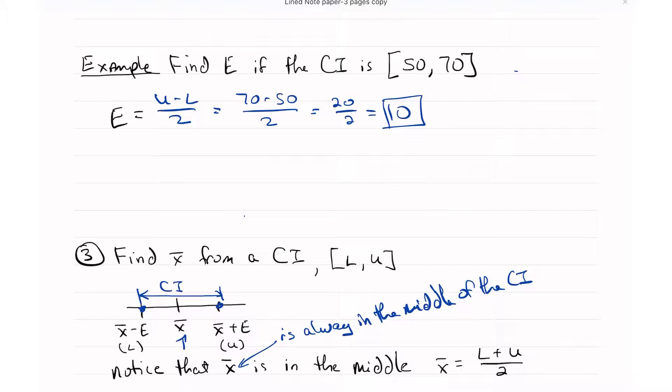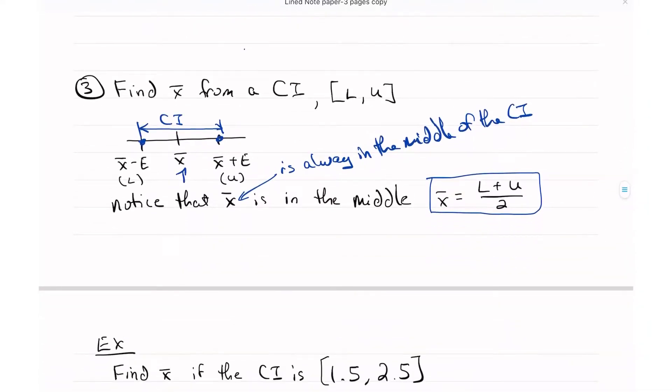So if it's in the middle, we get the middle midpoint by averaging. We're going to average L plus U divided by 2. That's the average of L and U. Let's do an example. I want to find X bar if the confidence interval is 1.5 to 2.5. Well, we can just easily look at this and see that 2.0 is in the middle.